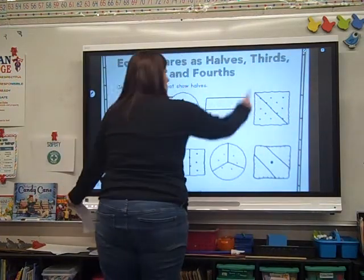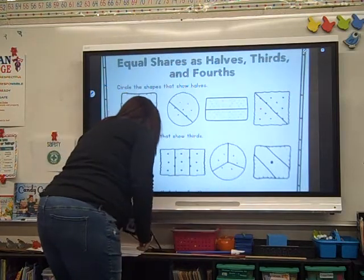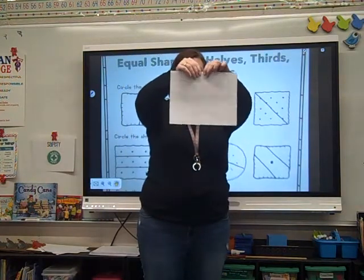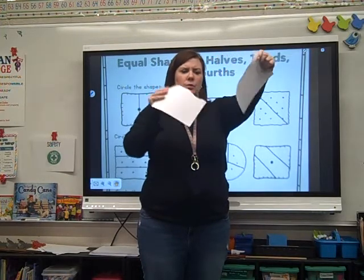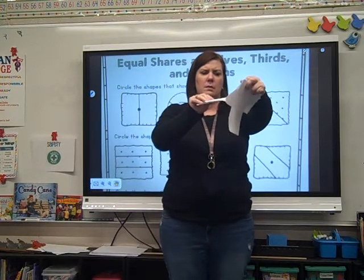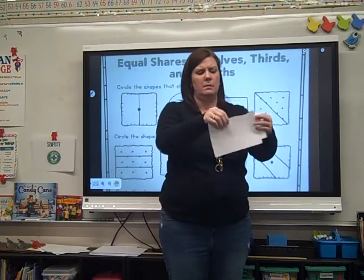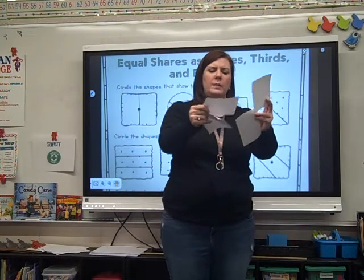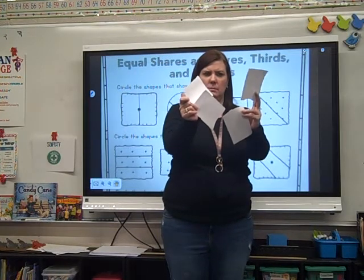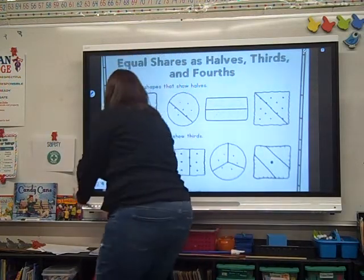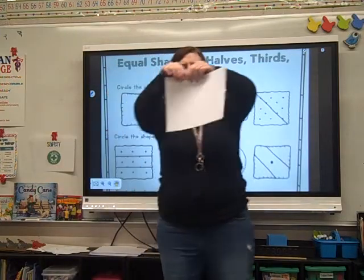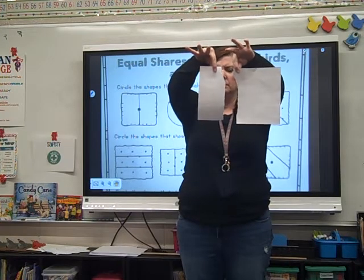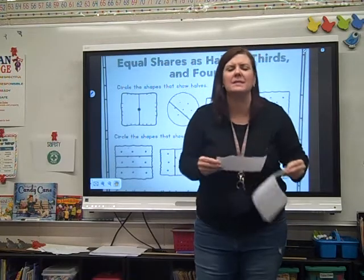And then finally, fourths. If I break something up into fourths, it has to be in four equal pieces like this. Here's two, three, four. Look — four equal pieces, as close as I could get it. Now, what if I do this? Is that tearing in half? No. Because it's not equal. It has to be equal.